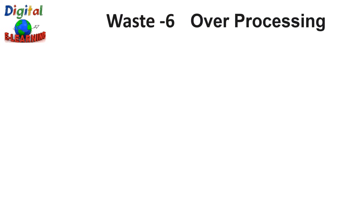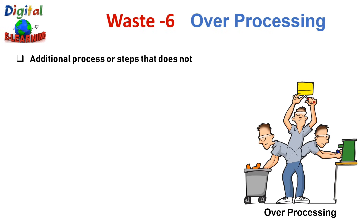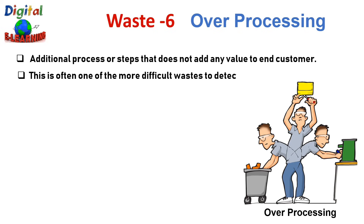The sixth category of waste is Over-processing — additional processes or steps that do not add any value to the end customer. This is often one of the most difficult wastes to detect and eliminate. It usually reflects doing work that does not bring additional value, or brings more value than required by the customer — such as adding features to a product that nobody will use but which increase business cost and the cost of the end product. For example, if you are a car manufacturer and decide to put a TV screen in the back trunk of a vehicle, probably nobody will use or find it valuable, yet it increases the end price.